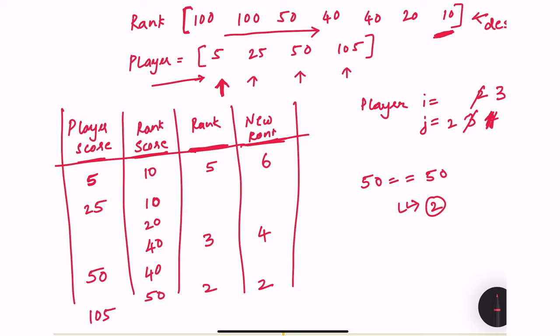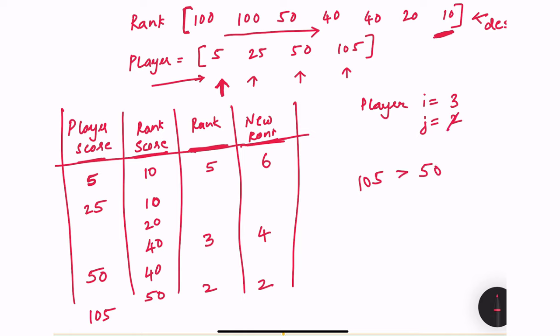The next player score is 120. Comparing with current rank score 50 — 120 is greater, so decrement j to 1, giving score 100 with rank 1. Still 120 is greater, so decrement j to 0, where the corresponding value is also 100. Since 120 is still greater and j is now 0, meaning we're comparing against the highest score ever recorded, the new player beats everyone and gets rank 1. This is the final output.